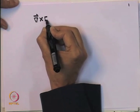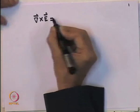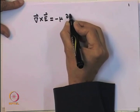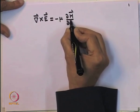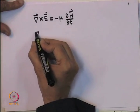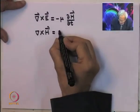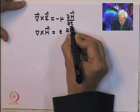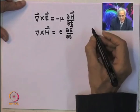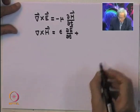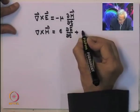We come back to Maxwell's equations. We have del cross E equal to minus mu dH/dt, and del cross H equal to epsilon dE/dt plus J. We assume the conductor is an ohmic conductor, so J equals sigma E.